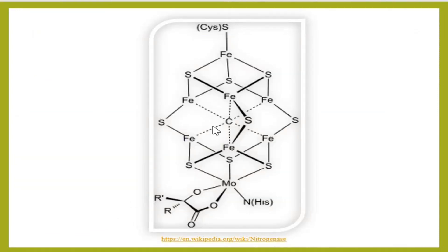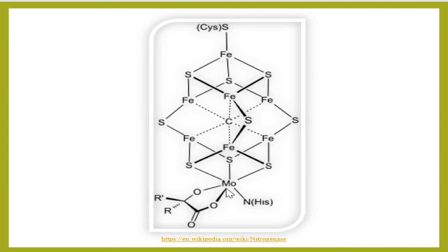In the FeMo cofactor structure, one unit has four Fe and three S, and another unit has three Fe, one Mo, and three S. These two units are joined via three sulfide linkages. One Fe in the cofactor is four-coordinated (not fully coordinated), while Mo is fully coordinated. Nitrogen binds here and Mo acts as the active site, making this the main center of nitrogenase enzyme.